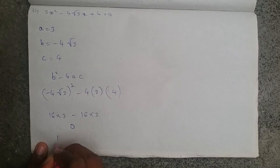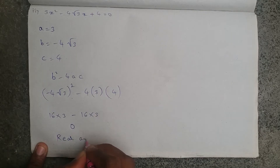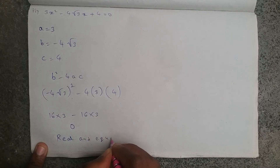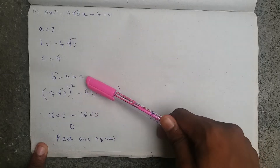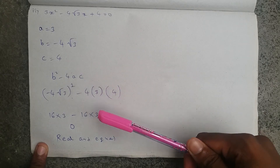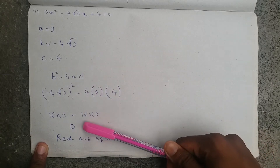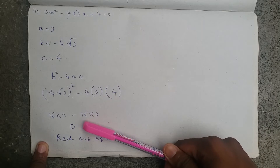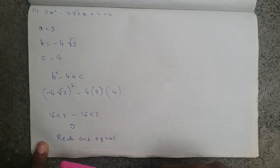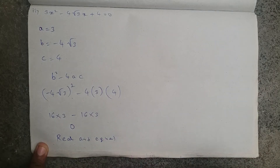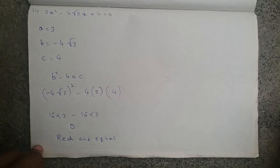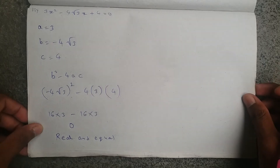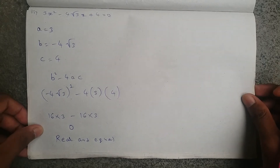So it has real and equal zeros. If b² - 4ac is exactly equal to 0, then the given equation has real and equal zeros. So in this case real zeros are there, and we need to find out what those zeros are.